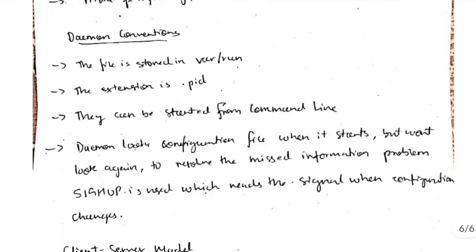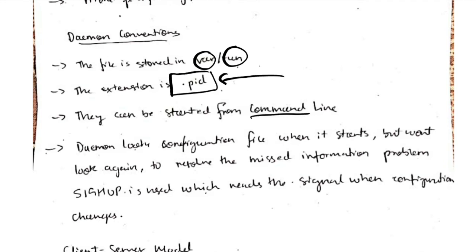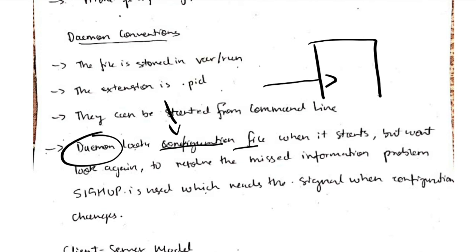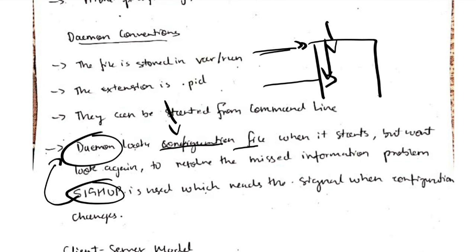Some daemon conventions: it is stored in the /var/run directory with a .pid file extension, and it starts from the command line. When it starts a process, it reads the configuration file. However, if the configuration file changes later, the daemon will not automatically know. For this we can use SIGHUP — whenever the configuration file changes, it sends a signal so that the program restarts and reads the new configuration file.